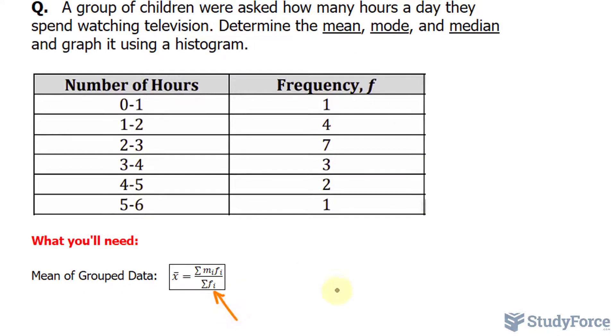So this part right here is the easier of the two. We can find the sum of the frequencies by simply adding up all of these observations: 1 plus 4 plus 7 plus 3 plus 2 plus 1. That's 5, 12, 15, 17, and 18.